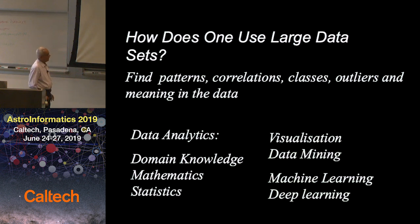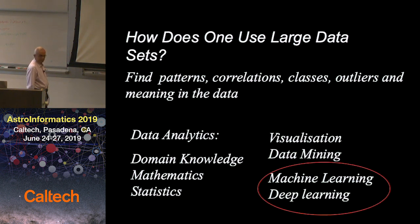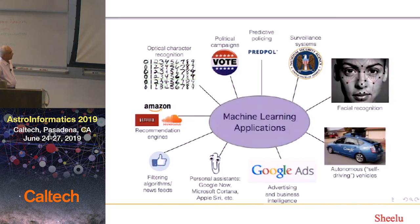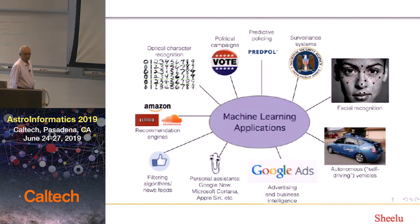Yesterday we had a session on visualization, and today we cover machine learning and deep learning, which is what I'll be considering today. There are different applications of machine learning not really in the domain of science, but I'll be using image recognition here in two cases — in biology and astronomy — plus also encoders for spectral classification.